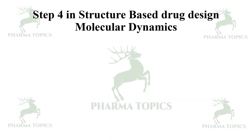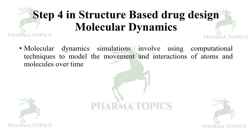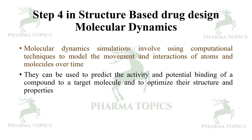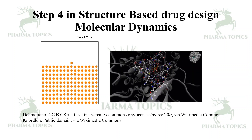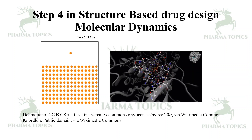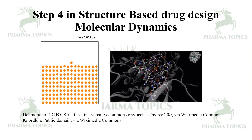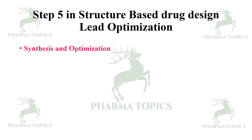Step 4 is molecular dynamics. Molecular dynamics simulations use computational techniques to model the movement and interactions of atoms and molecules over time. They can be used to predict the activity and potential binding of a compound to the target molecule and to optimize structure and properties. When a lead or hit interacts with target proteins, it causes numerous interactions — all atomic interactions are combined and energy levels are calculated in molecular dynamics.